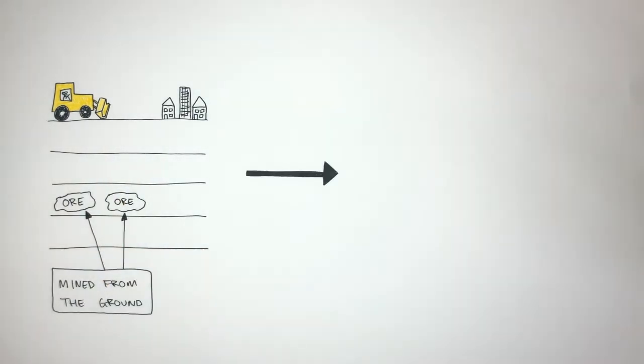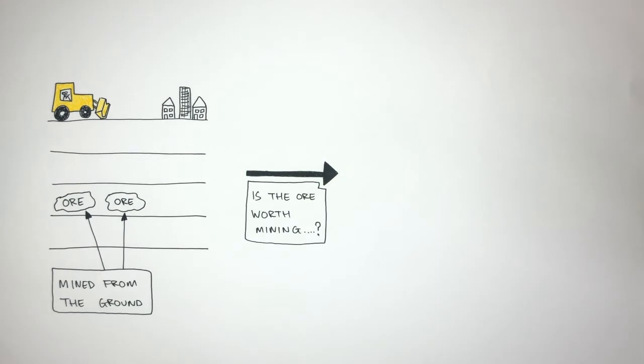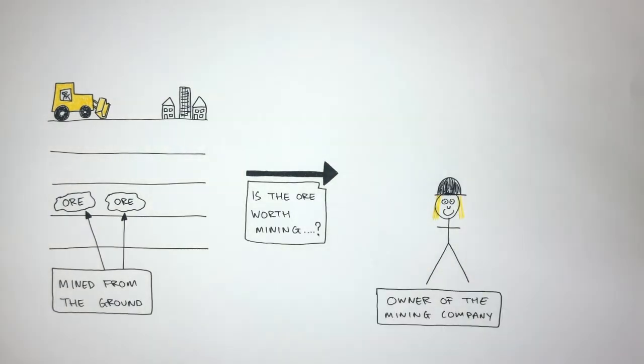Now, if a company were to mine the ore, they'd need to ask themselves, is the ore worth mining? So let's say this woman represents the owner of the mining company. For her to know if the ore is worth mining, she would need to ask these three critical questions.